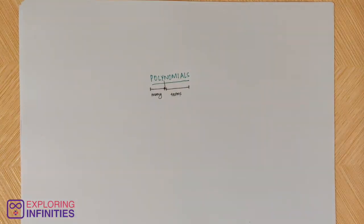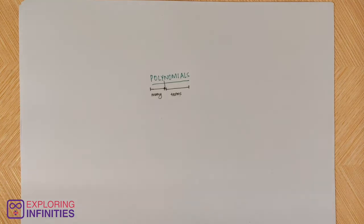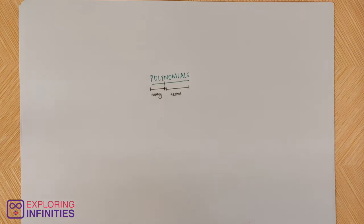Simply put, polynomials is an expression consisting of many terms — that is all. That is what we'll be studying in this chapter in detail: the many terms that are there in an expression.